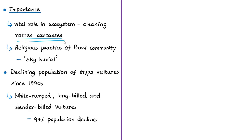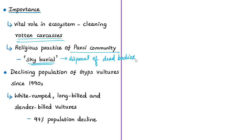Vultures play a vital role in the ecosystem by cleaning up rotten carcasses left in the open. They scavenge on carcasses of animals, thereby helping to keep the environment clean. They also scavenge on human carcasses, as the Parsi community has a religious practice of sky burial, where the corpse is exposed to the sun and consumed by birds of prey such as vultures and crows, to cleanly and efficiently dispose of human bodies.